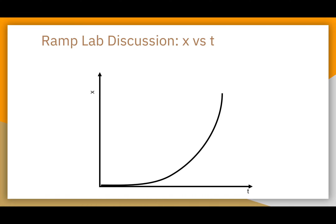Right now we're going to discuss the position versus time graph produced from the ramp lab. In the ramp lab, at time zero seconds we had some position relatively close to the beginning point on the ramp — a relatively low position. As time went on, position got bigger and bigger. In this case, position is going to be proportional to the square of time, and we need to analyze this type of graph based on what we know.